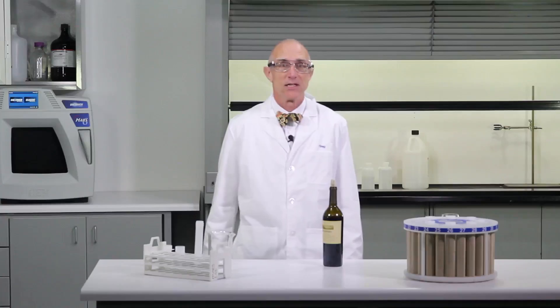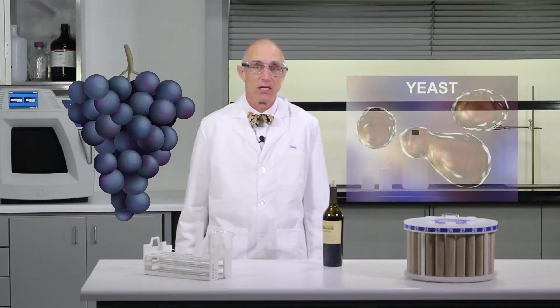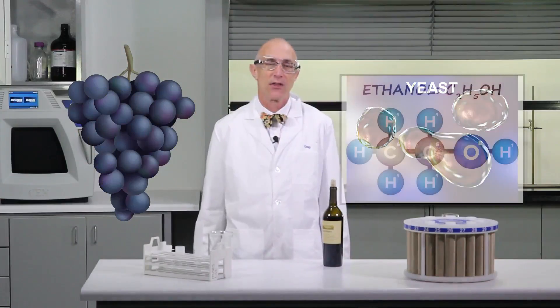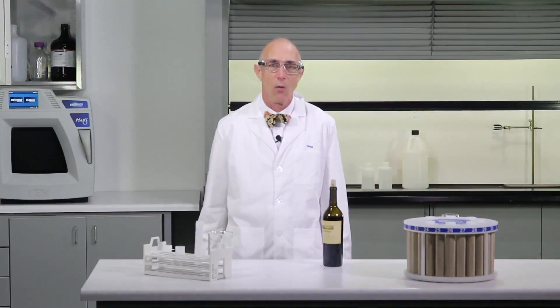Wine from Latin Venum is an alcoholic beverage made from fermented grapes or other fruits. Grapes ferment without the addition of sugars, acids, enzymes, water, or other constituents. Yeast consumes the sugar in the grapes and converts it to ethanol. Different grapes and yeast strains provide a wide variety of wines.